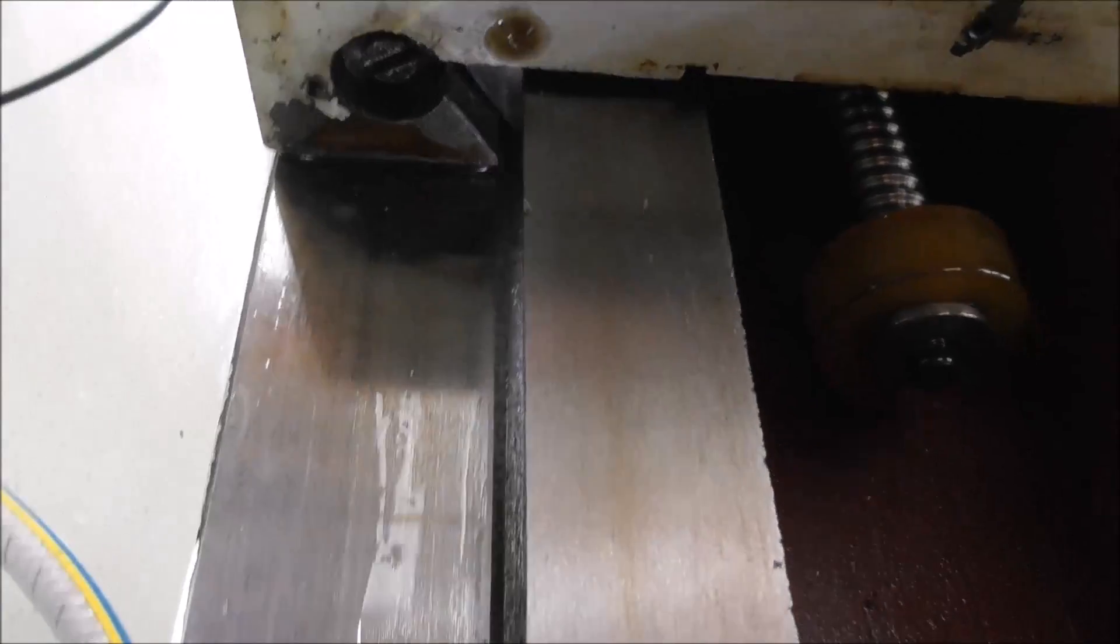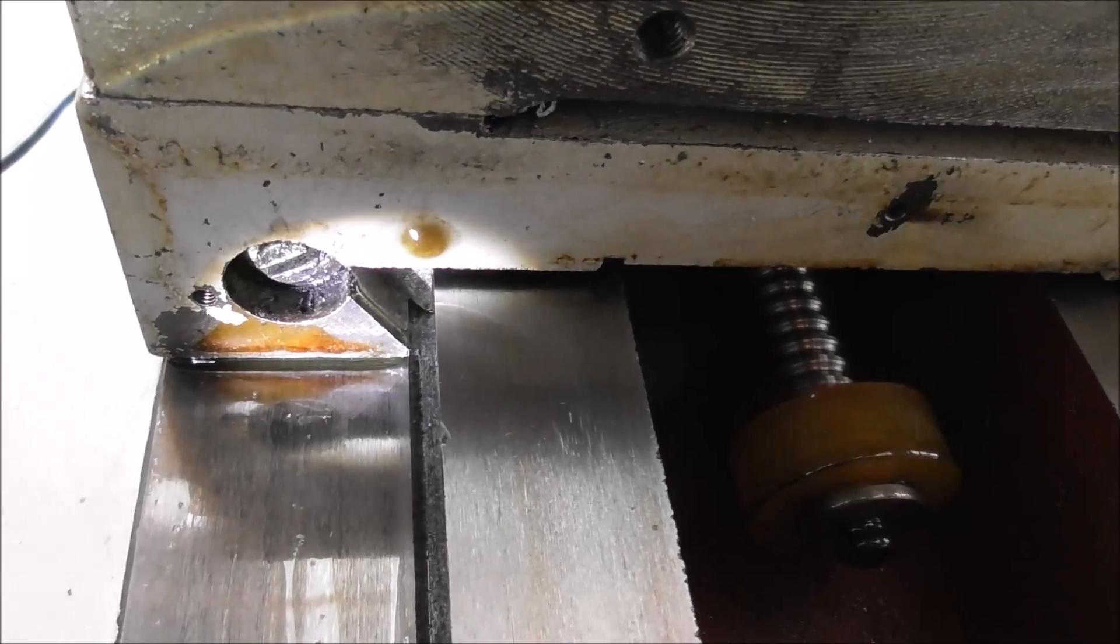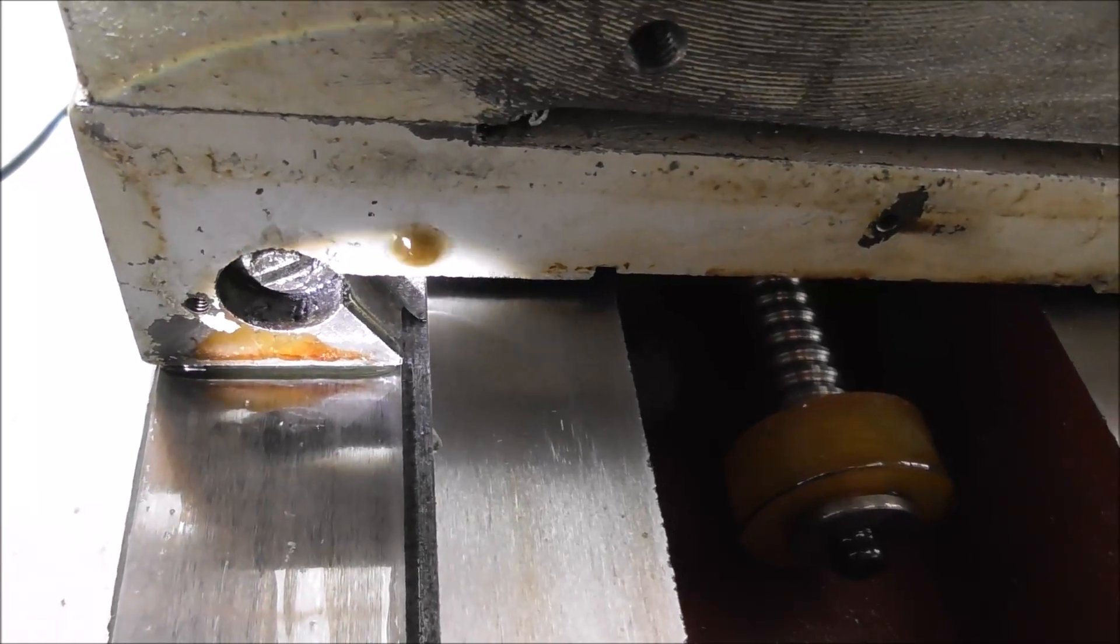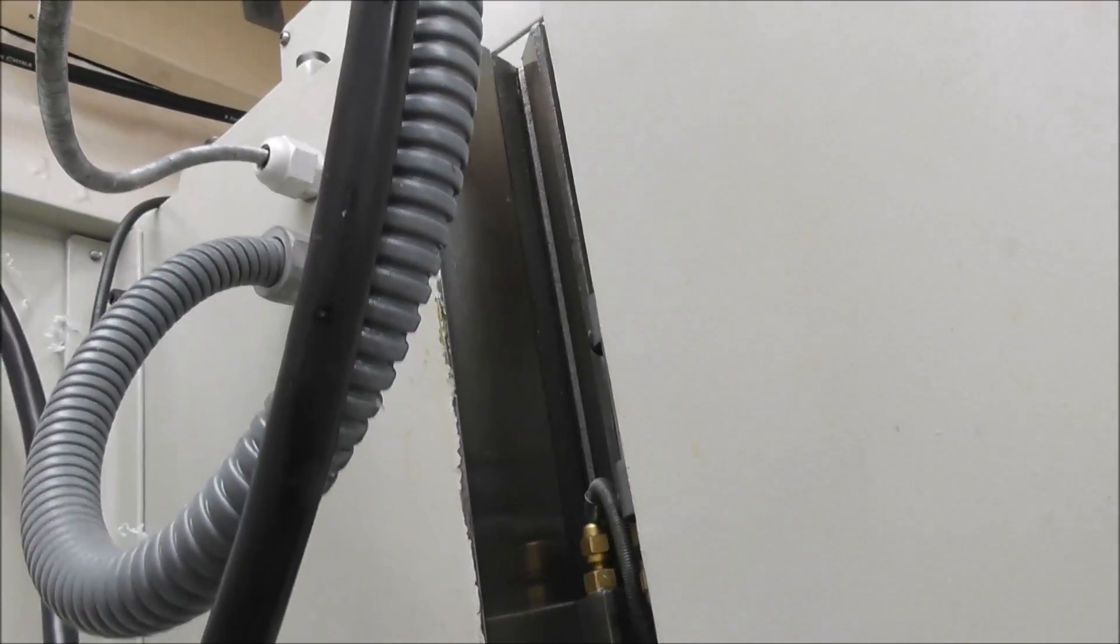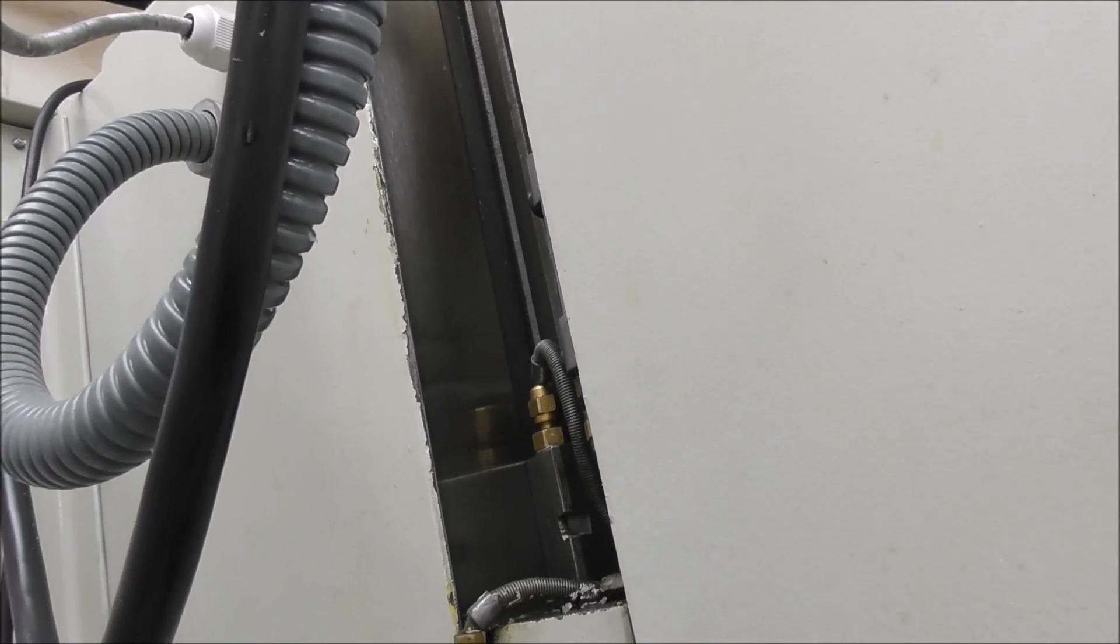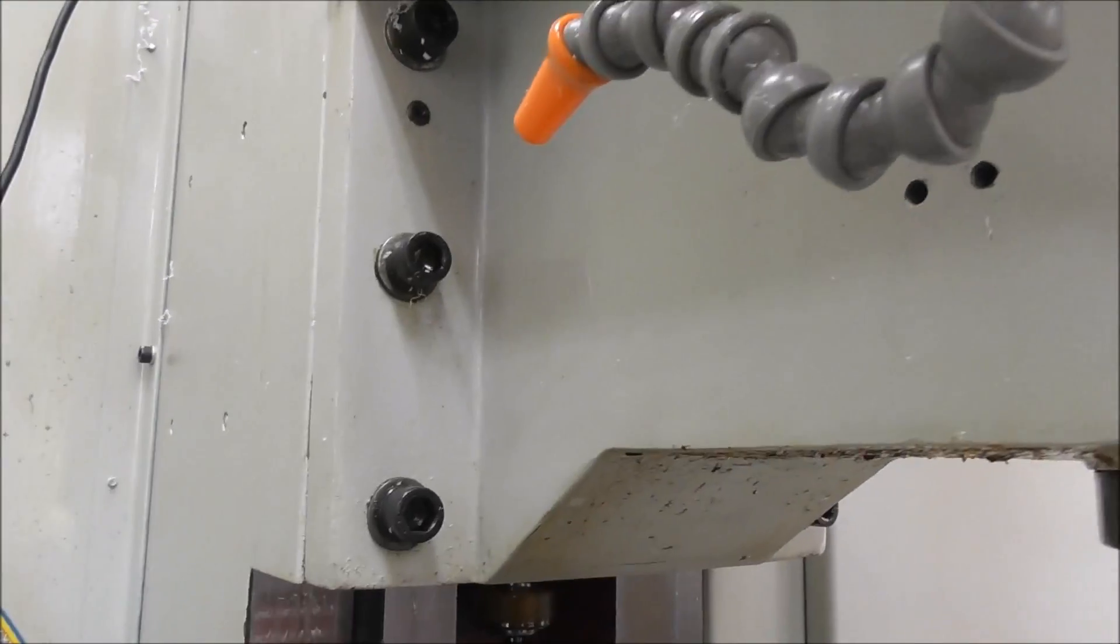The Z gib has an adjusting screw at the bottom of the gib there and at the top of the gib there.